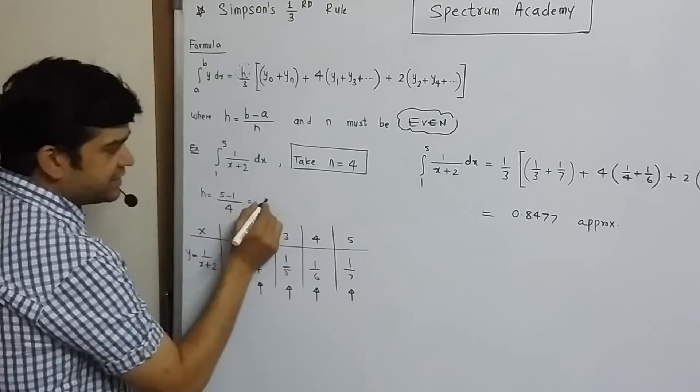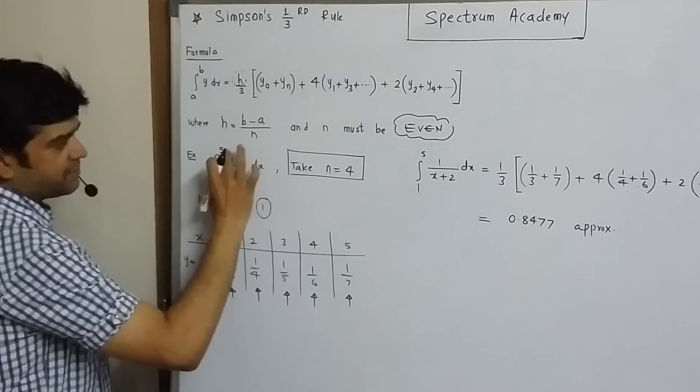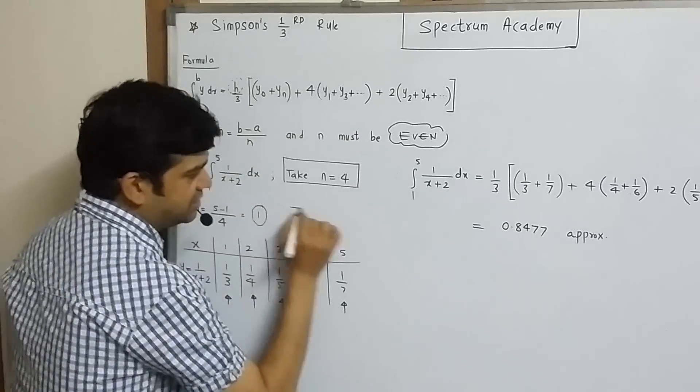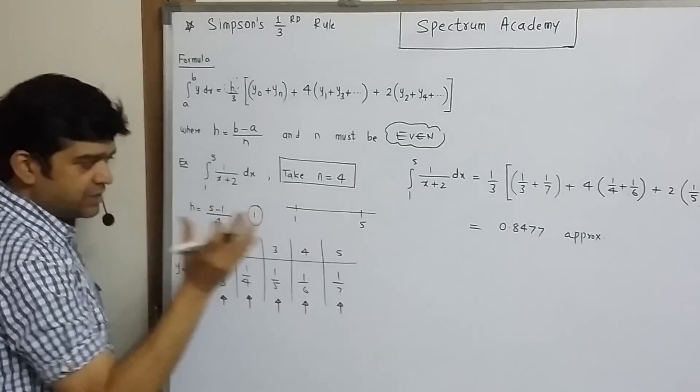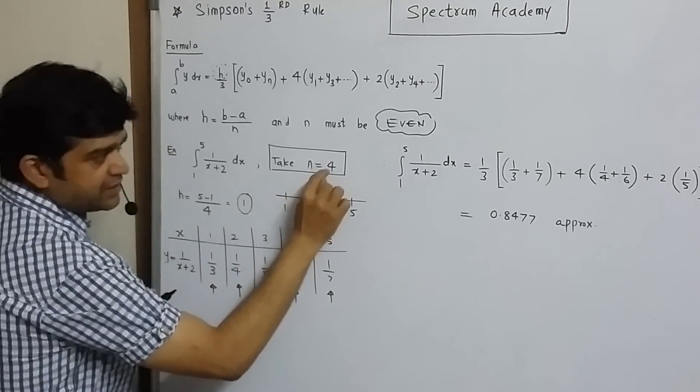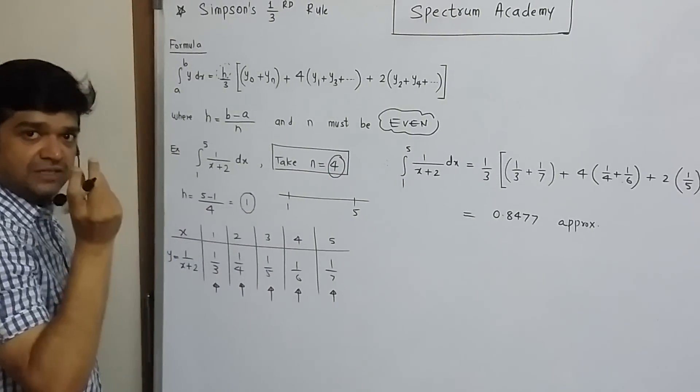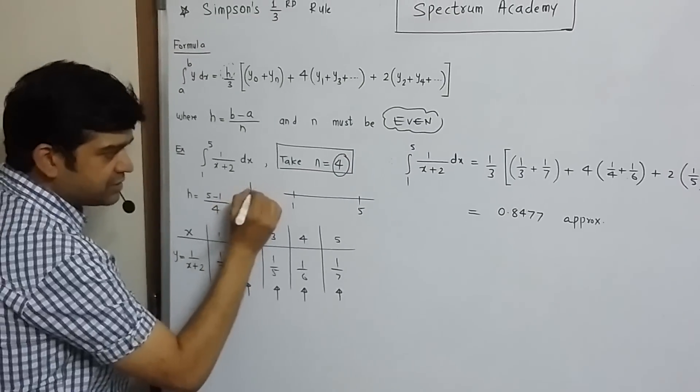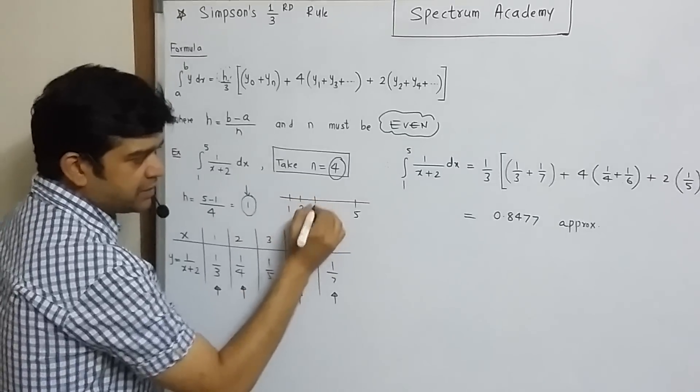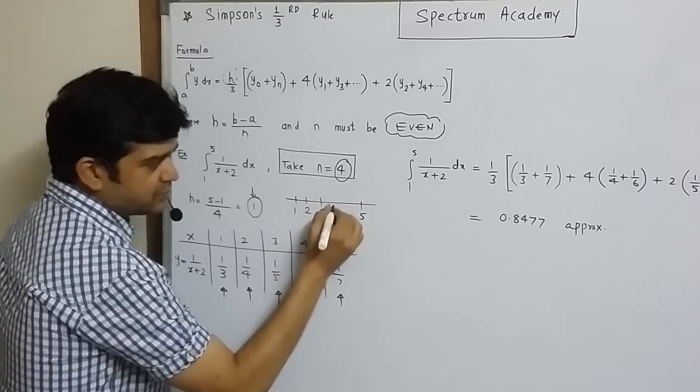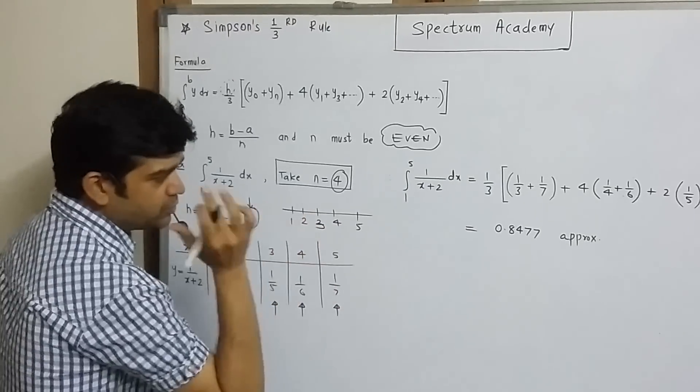So, what is next? After getting the value of h, next thing is, consider this interval which is 1 to 5. This interval, 1 to 5 will be divided into 4 sub-intervals, each having width 1. So, first interval will be 1 to 2, next 2 to 3, next 3 to 4 and then 4 to 5.